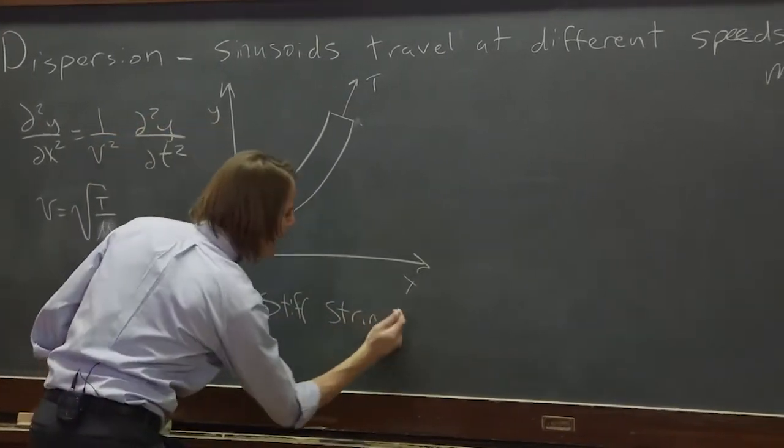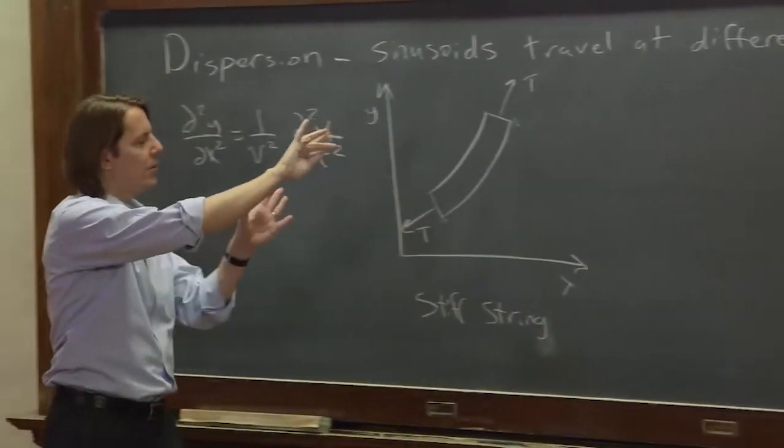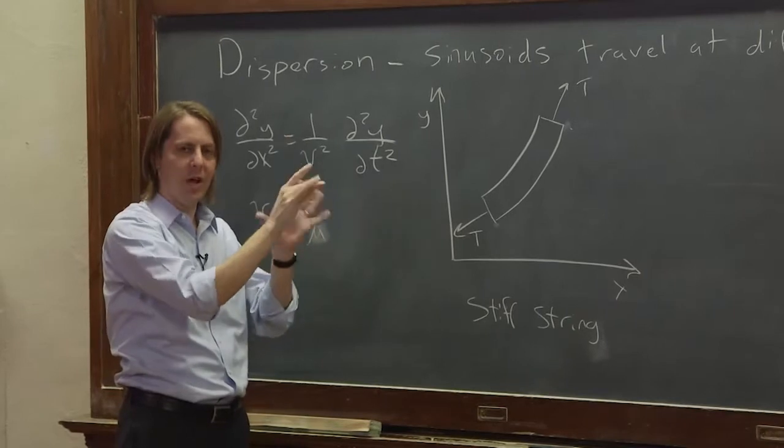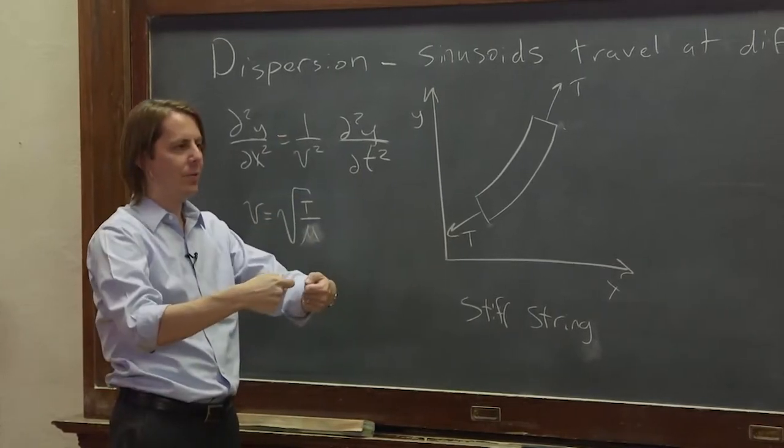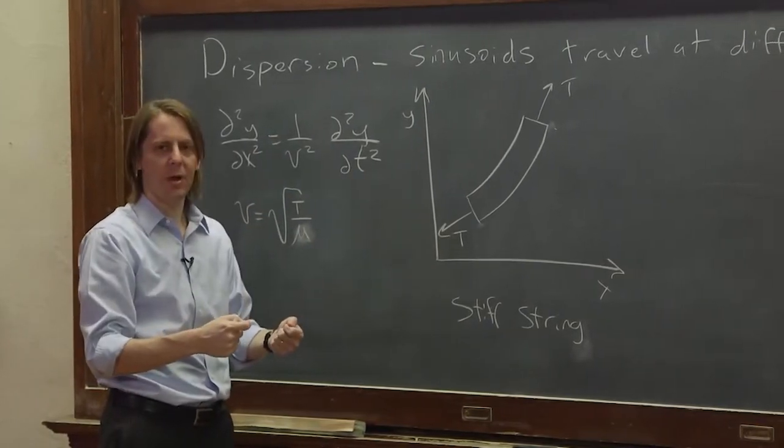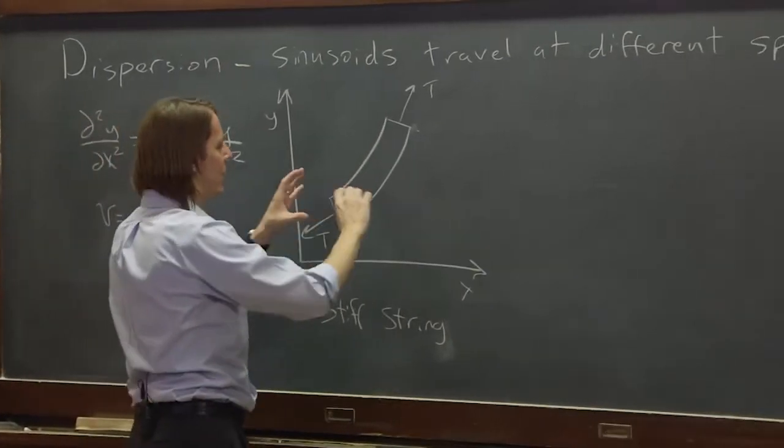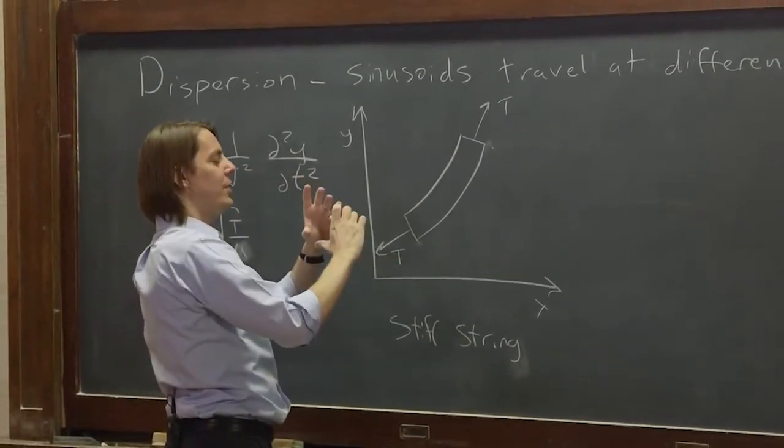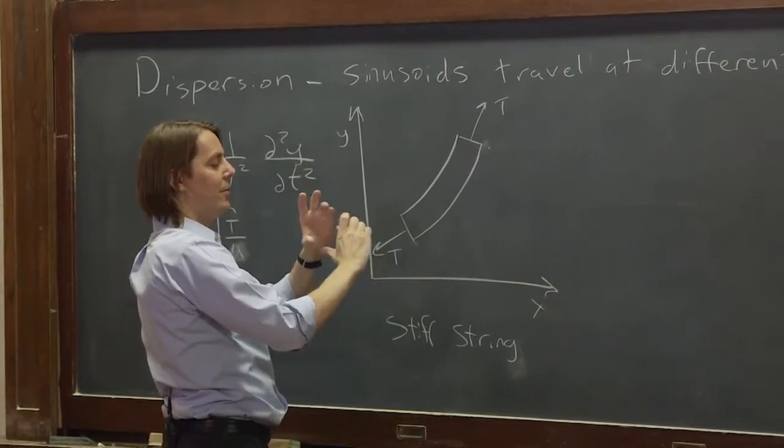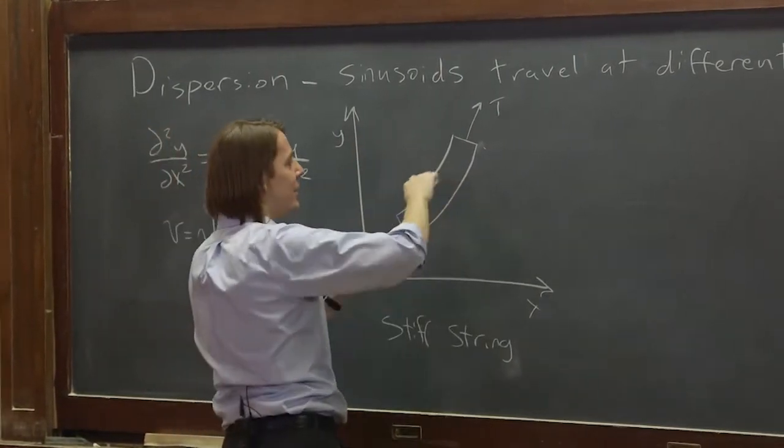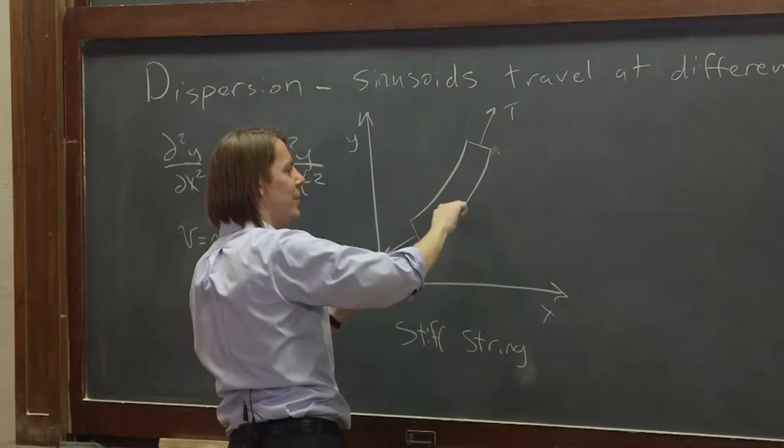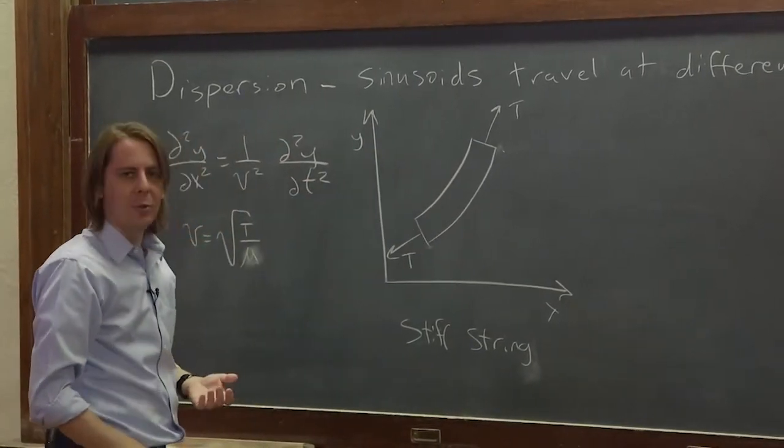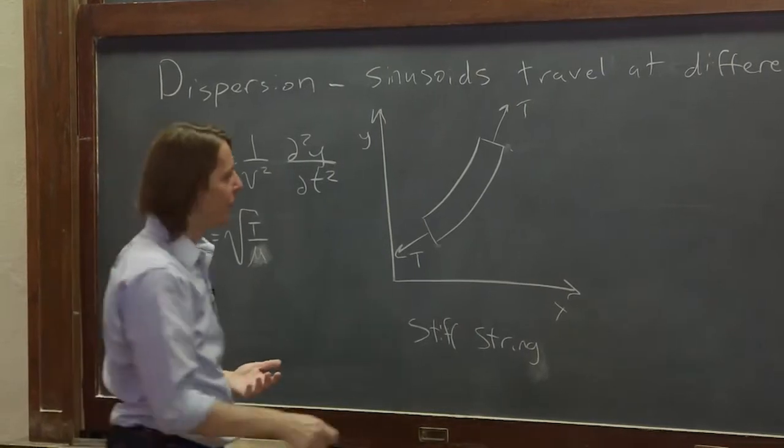In reality this string has some cross-sectional area and it's made out of some material that wants to be straight. It's an elastic material. If you bend it, it would rather unbend, it would rather not be curved. When it's straight, all along its cross-section all the pieces of elastic are under the same stress, and when you bend it this side is compressed and this side is expanded and it would rather not be. So what this does is leads to another force that we did not consider before.